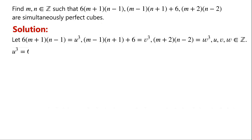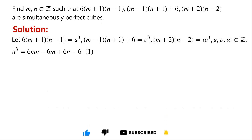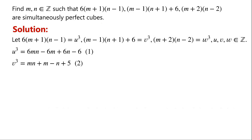u cubed equals 6mn minus 6m plus 6n minus 6. We label this as equation 1. v cubed equals mn plus m minus n plus 5. We label this as equation 2.